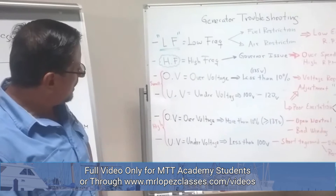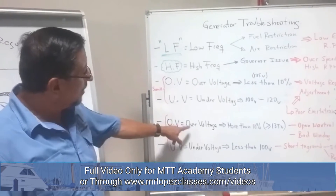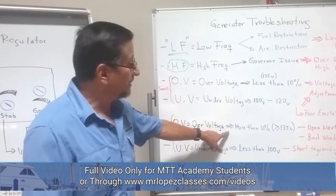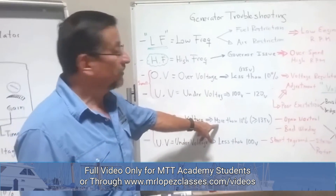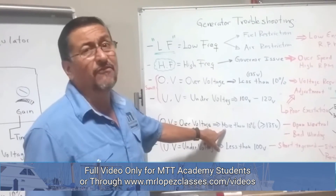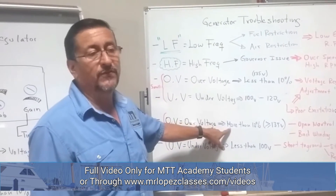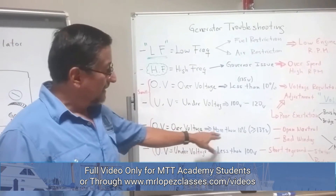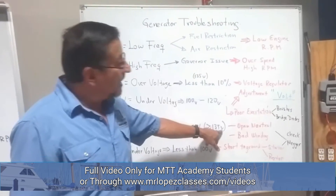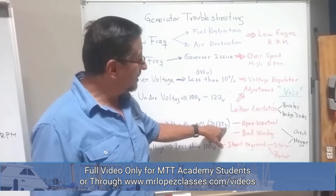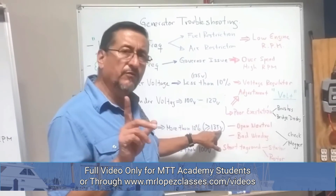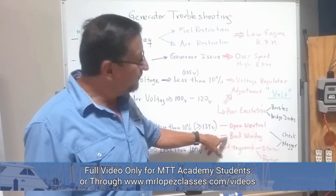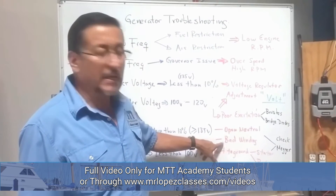If the output voltage is high — over voltage, more than 10% — for example, the output voltage is 150 or 160 volts instead of 120, you have two possibilities. One possibility is an open neutral. The other possibility is a bad winding.